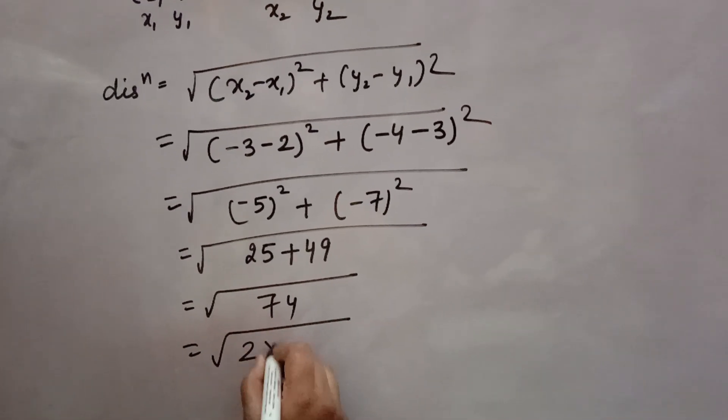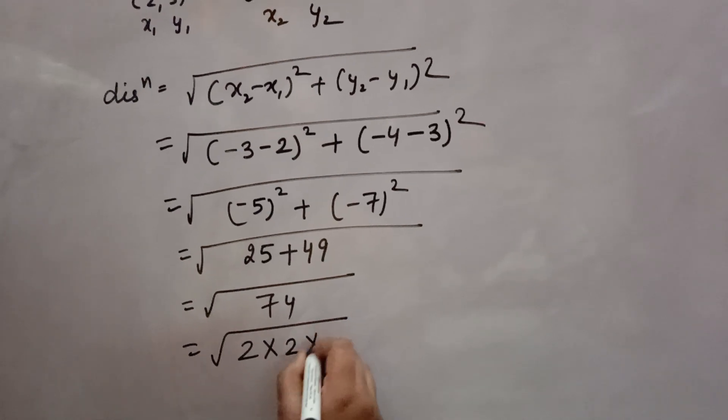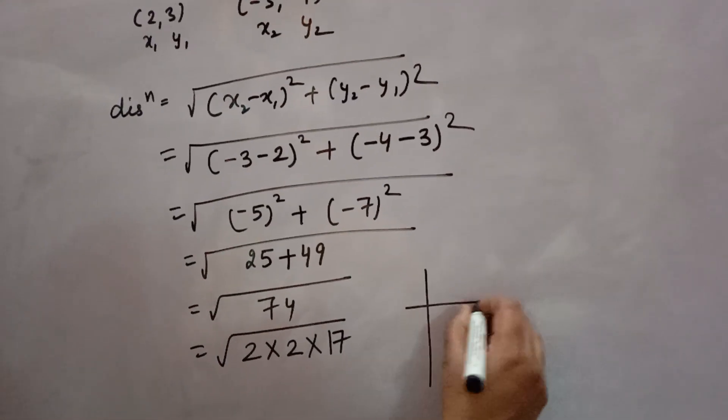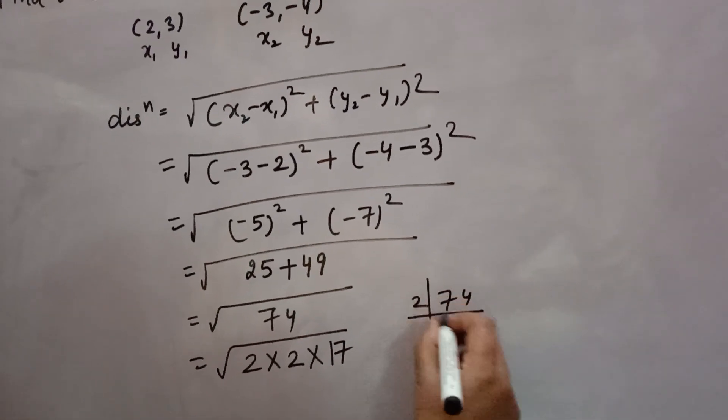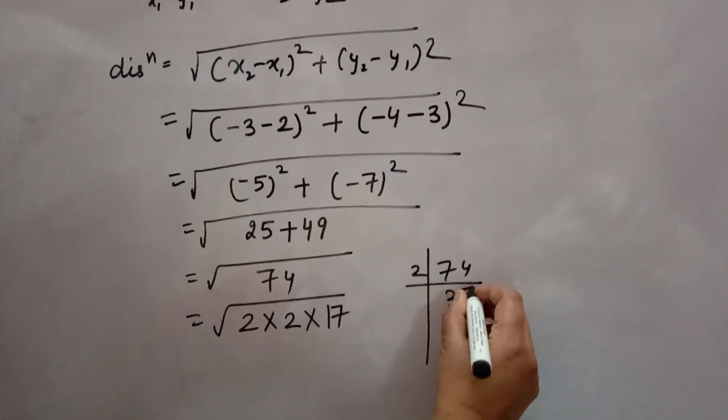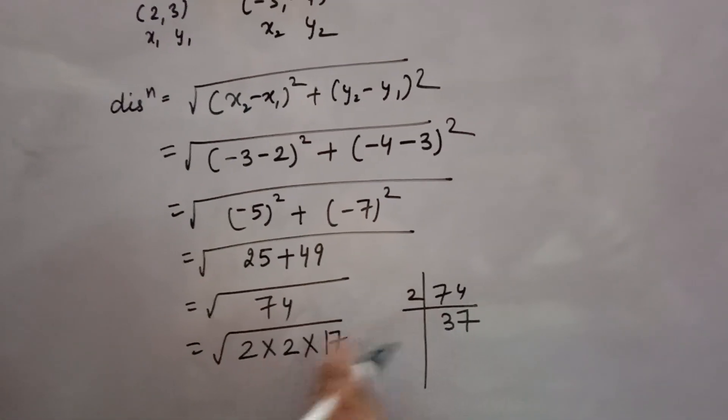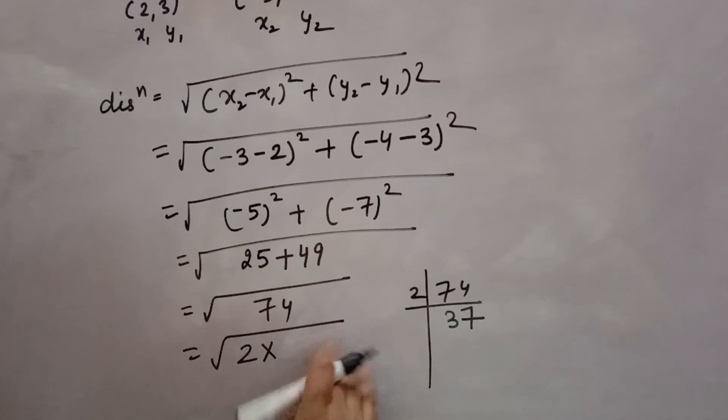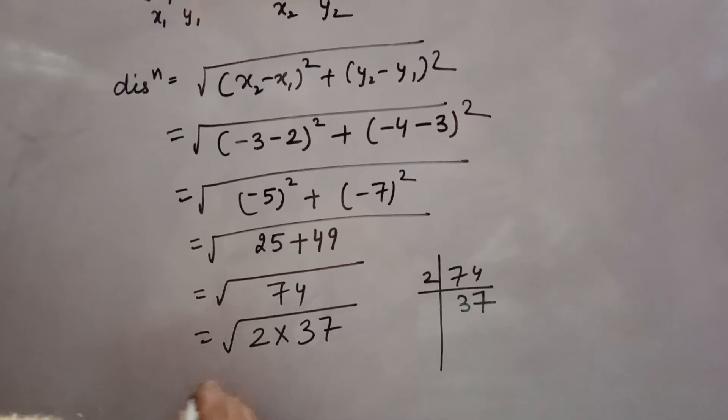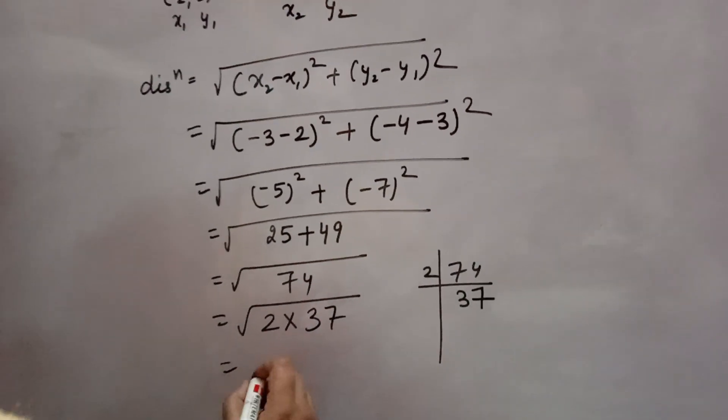Now 74 you can write 2 into 2 into 17. If you don't know, you can see like this. 2 threes are 6, 2 sevens are 14. So here 2 will not come. What will come? 37.